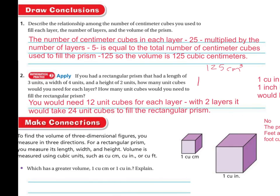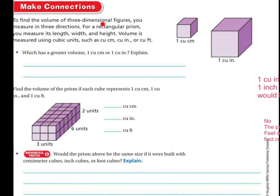Because remember, you're doing three dimensions. So you have the length times the height times the width, right? To find the volume of three-dimensional figures, you need to measure it in three different directions. For a rectangular prism, you measure its length, its width, and its height. Volume is measured in cubic units, such as cubic centimeters, cubic inches, or cubic feet.